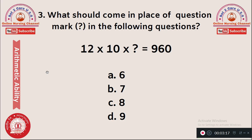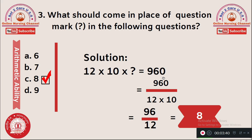Question 3: What should come in place of the question mark? 12 × 10 × ? = 960. Options: A) 6, B) 7, C) 8, D) 9. Keep the question mark on the left-hand side and move all other numbers to the right. So ? = 960 ÷ (12 × 10) = 960 ÷ 120. Cancelling the zeros gives 96 ÷ 12, then 96 ÷ 12 = 8. Option C, 8, is the right answer.